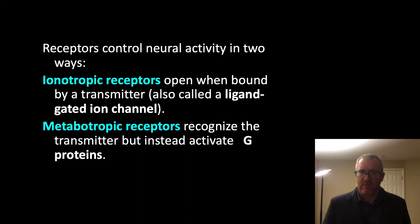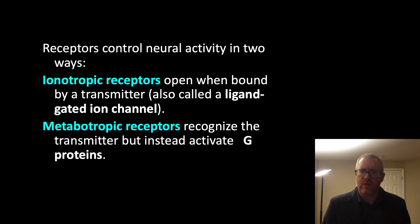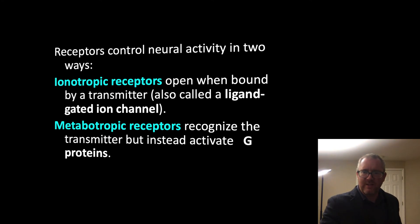Metabotropic receptors, on the other hand, are typically seven protein units that span or traverse the plasma membrane. When a ligand binds to the metabotropic receptor, it goes through a conformational shift resulting in the activation of a G-protein unit, which is composed of three subcomponents that would then go on to produce effects. Metabotropic receptors are slower to activate because of this secondary effector system, whereas ionotropic receptors have more instantaneous action.